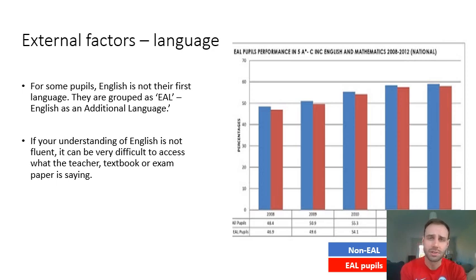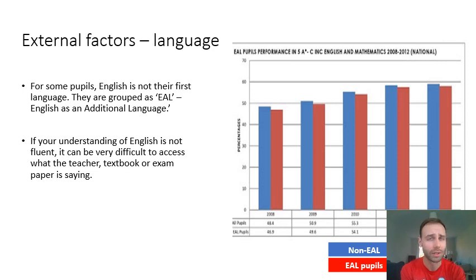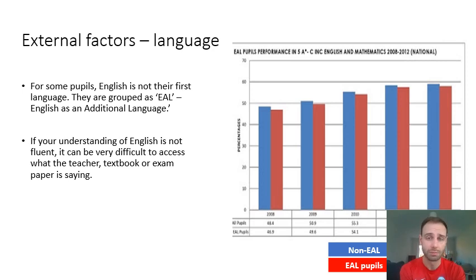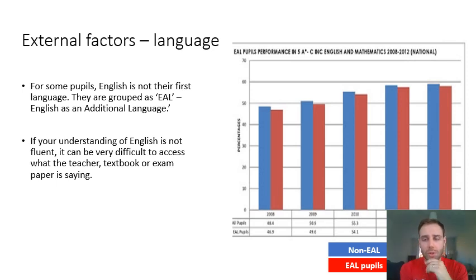If your understanding of English isn't fluent, it will be very difficult to access school, because lessons are taught in English — including tier-two language like 'compare,' 'contrast,' and 'evaluate' — words you wouldn't normally learn first when acquiring a language. The textbook is written in English, and the exam paper is entirely in English. Many EAL children are not lacking intelligence but simply cannot fully understand the English exam paper. The graph shows that from 2008 to 2012, EAL pupils consistently scored lower in GCSEs than non-EAL pupils.